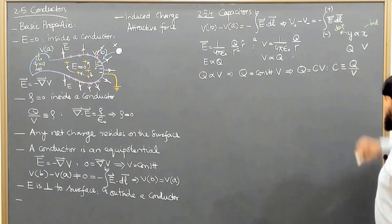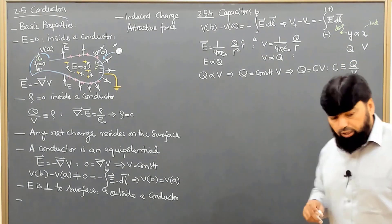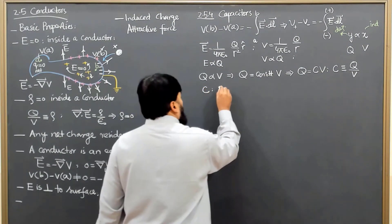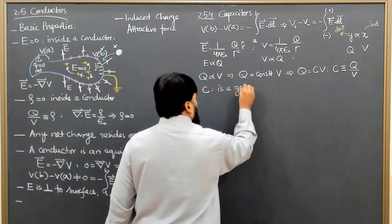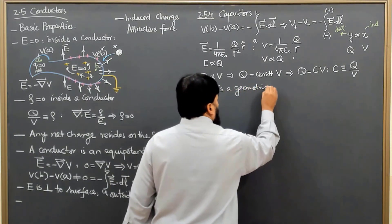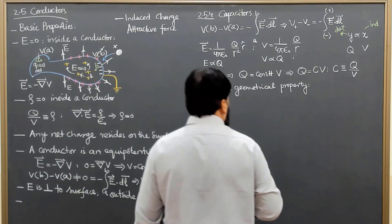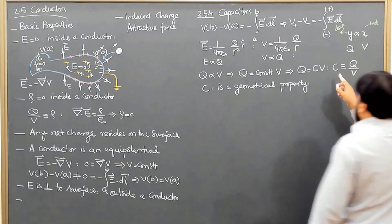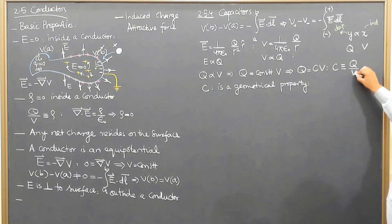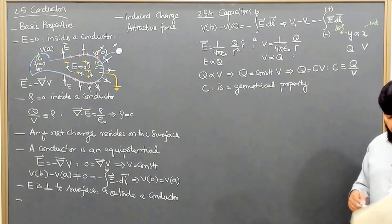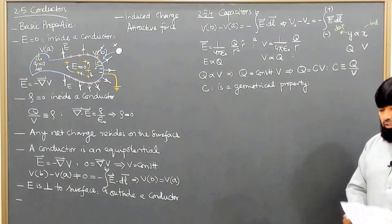One very important thing: capacitance is a geometrical property which depends on the geometry of the system. Capacitance has nothing to do with the charge or voltage - it is completely independent. Capacitance is purely a geometrical property, independent of both Q and V.